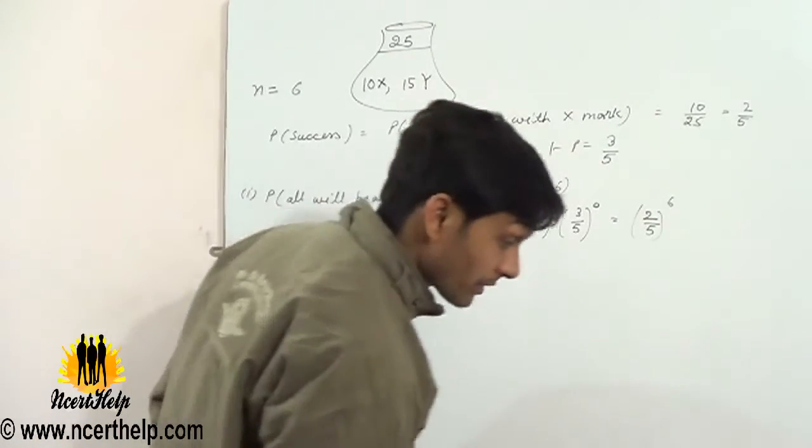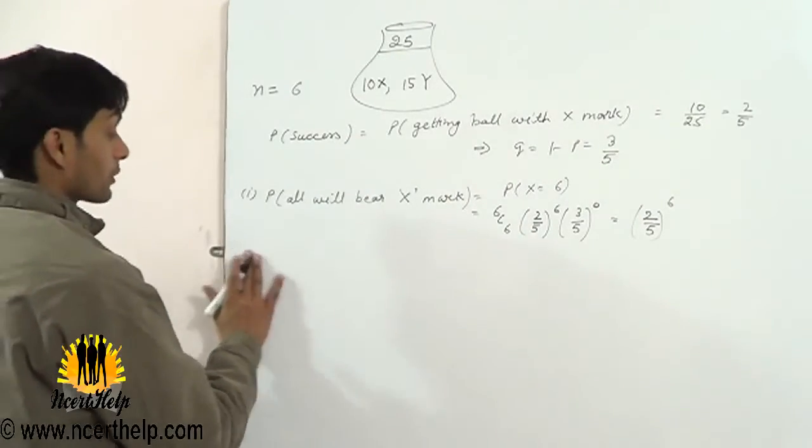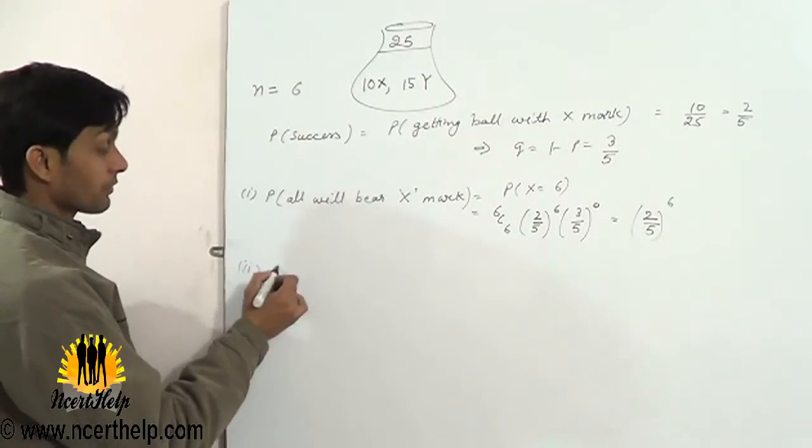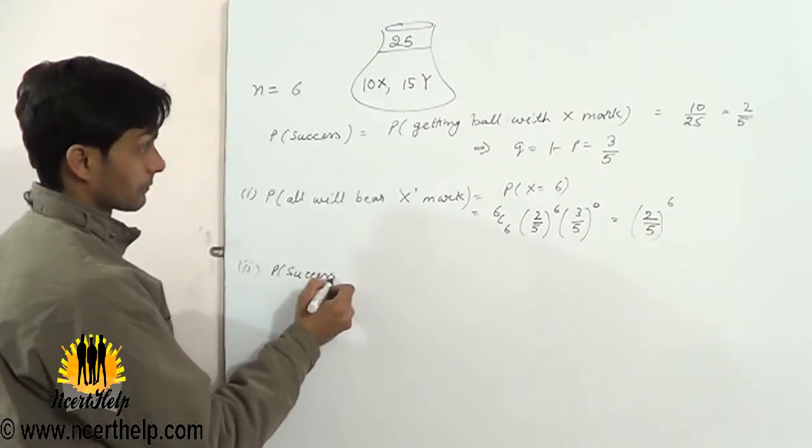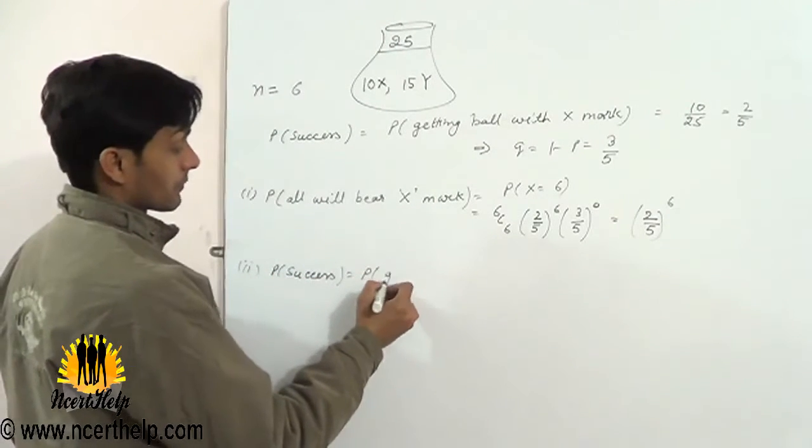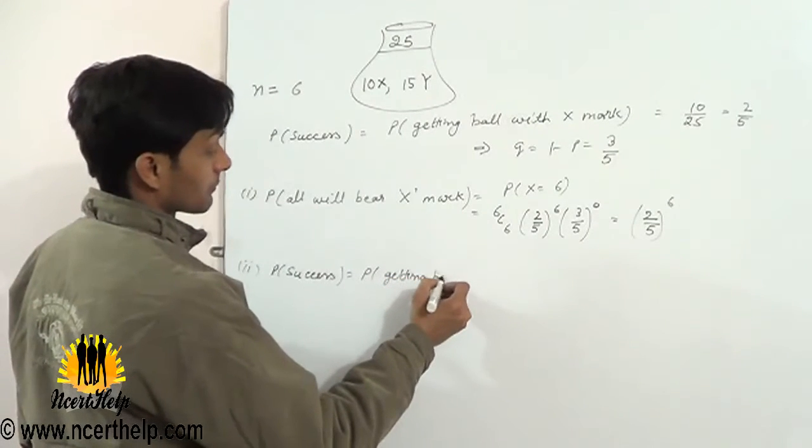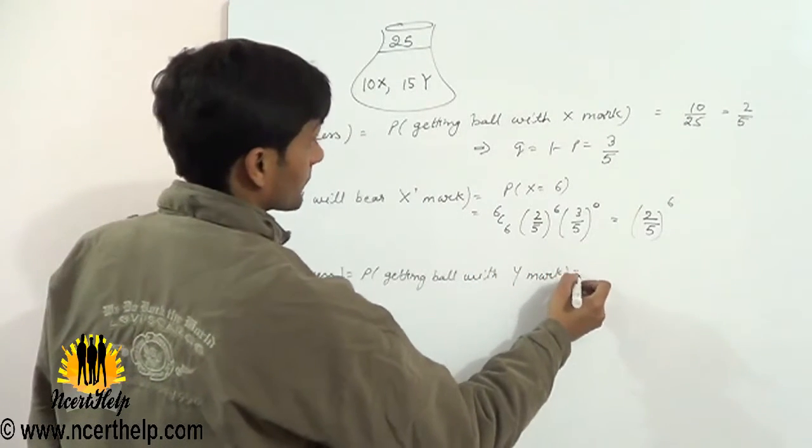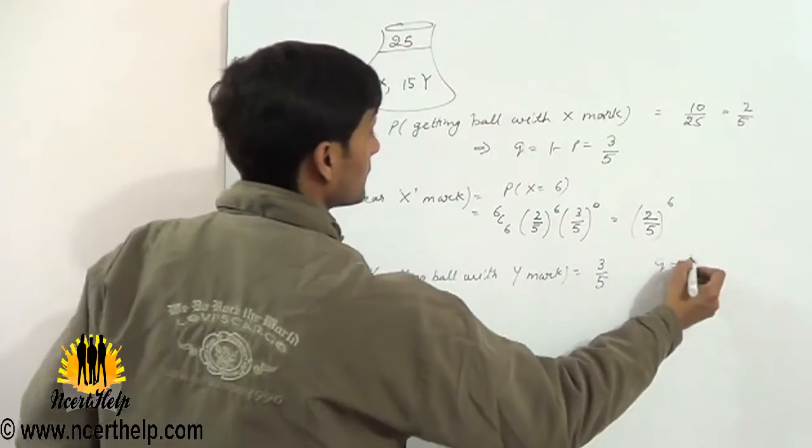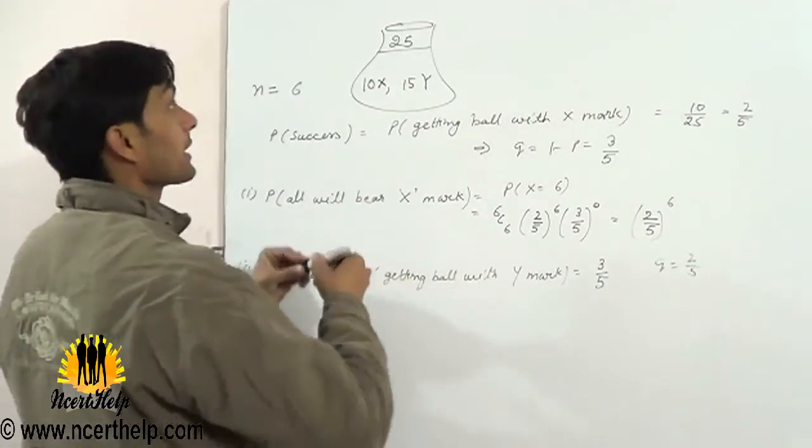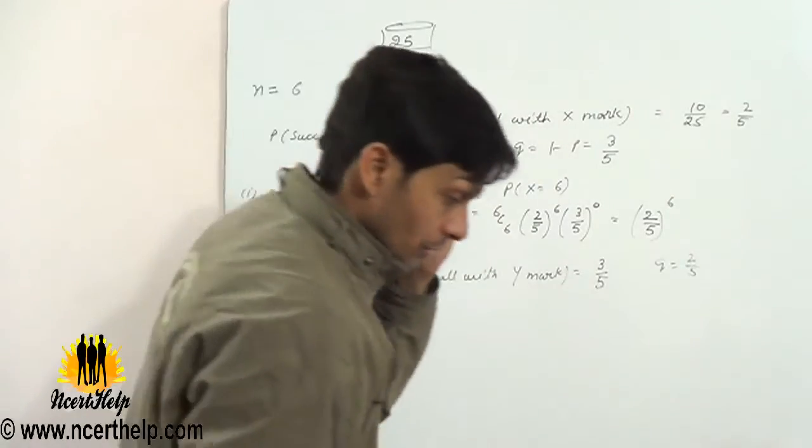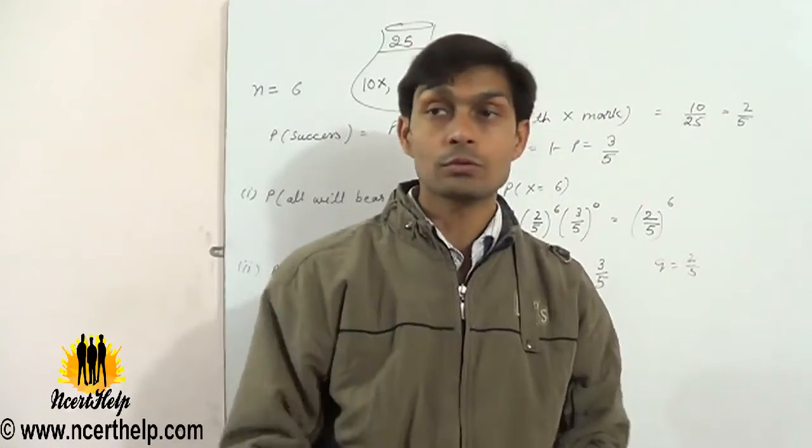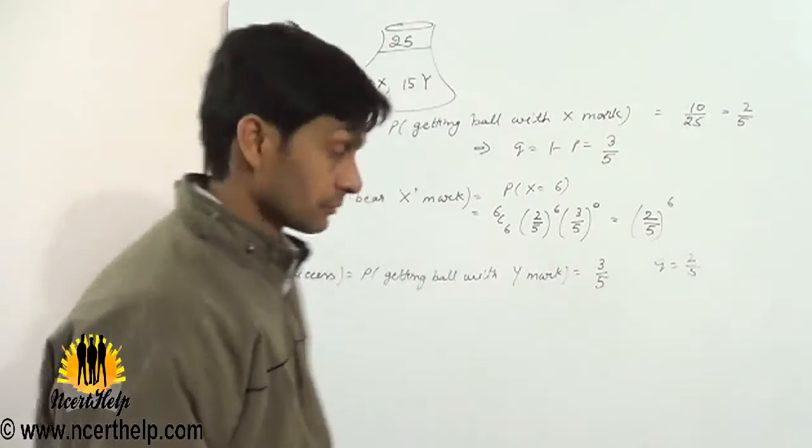Second part: not more than 2 will bear Y mark. Not more than 2 means 2 or less, so 2, 1, or 0.